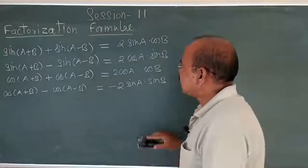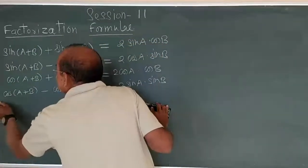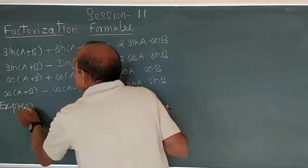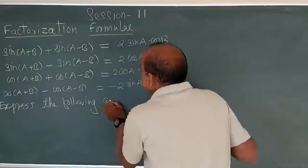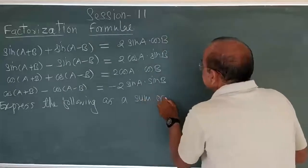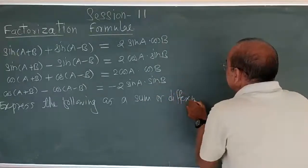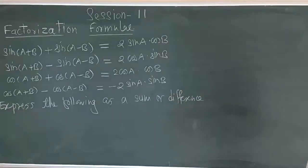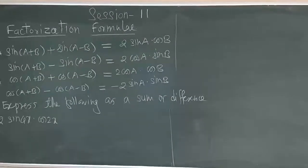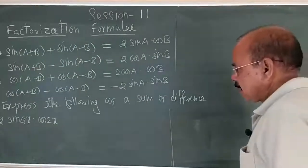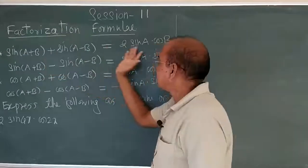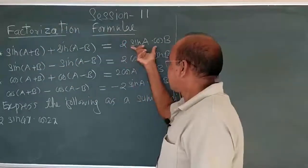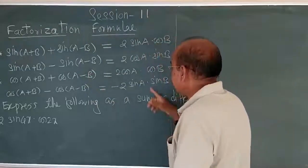The problems above say: express the following as a sum or difference. This is the type of problem. The first problem: 2 times sin 4x into cos 2x. Express the following — we need to convert a product into a sum or difference. We use the formula in reverse: product converts into sum or difference.